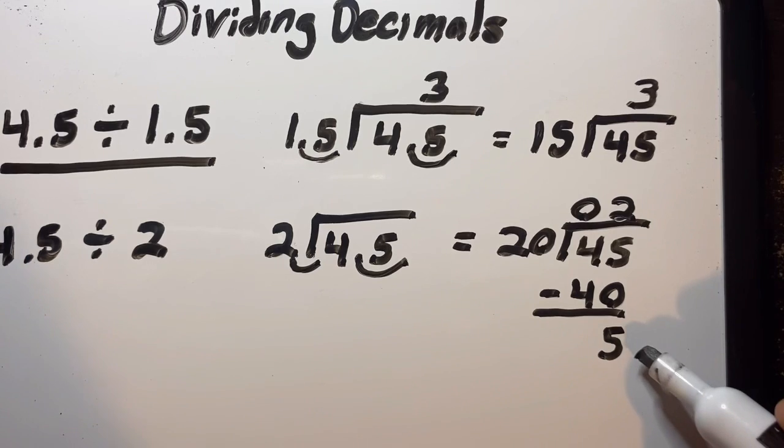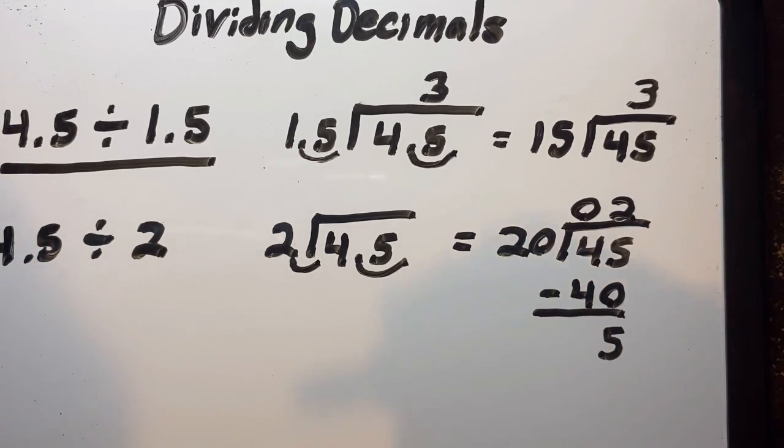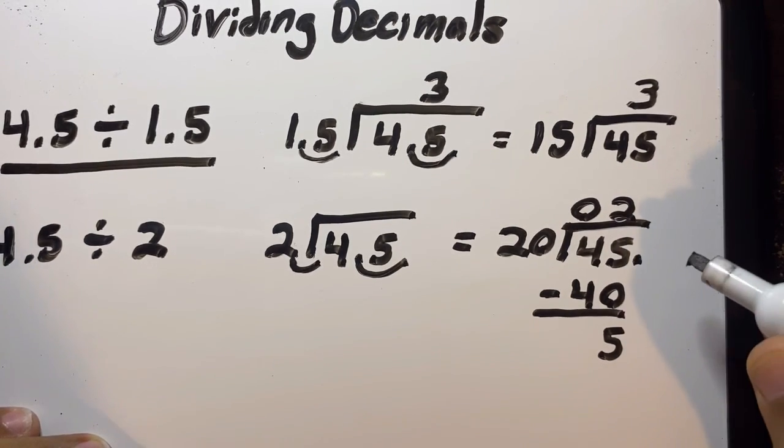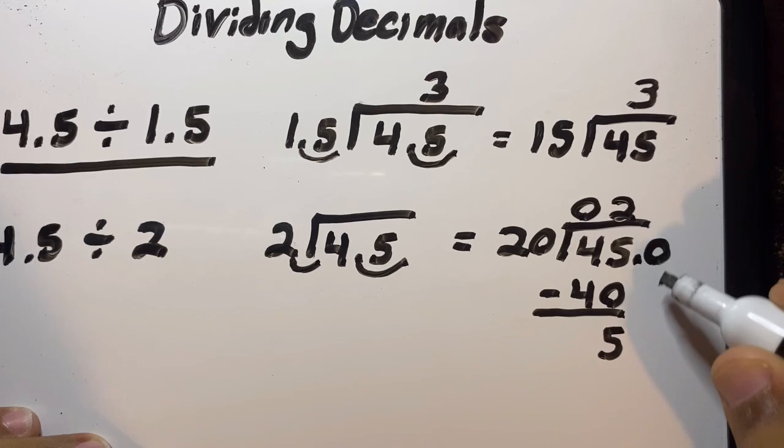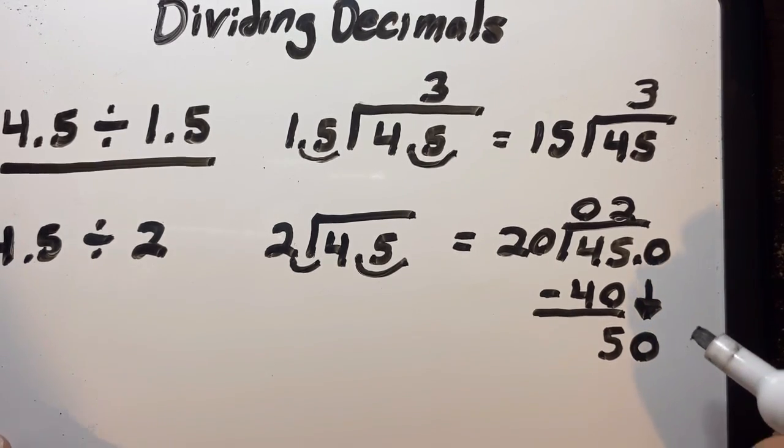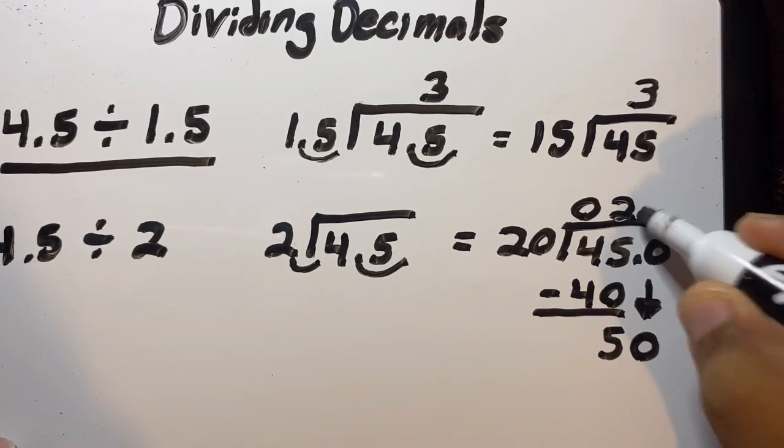We're going to subtract that: 45 minus 40 is 5. Now we're not done because there's a remainder here, which means this number is going to be a decimal. To do that, I'm going to put a decimal point here, add a zero, drop down the zero, and now I have 50. Remember, because I added a decimal point here, I now have to add it here.